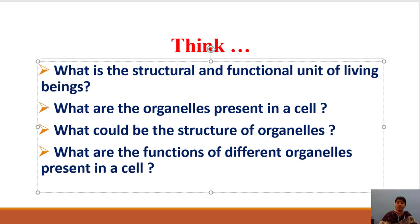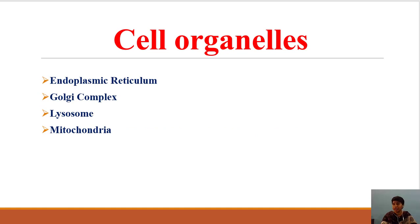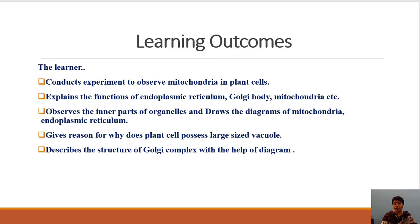Today we are going to learn about some more organelle structures and their functions: endoplasmic reticulum, Golgi complex, lysosomes, and mitochondria. The learner will conduct an experiment to observe mitochondria in plant cells, explain the functions of endoplasmic reticulum, Golgi body, and mitochondria, observe inner parts of organelles, draw diagrams, give reasons for why plant cells possess large vacuoles, and describe the structure of Golgi complex with diagrams. These are the learning outcomes from this lesson.